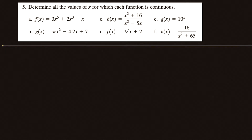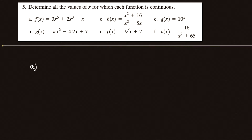We have this problem in continuity. It says to determine the values of x for which each function is continuous. Part A is a polynomial function of degree 5. A polynomial function is continuous for every x, so x is continuous from minus infinity to infinity because it's a polynomial function.